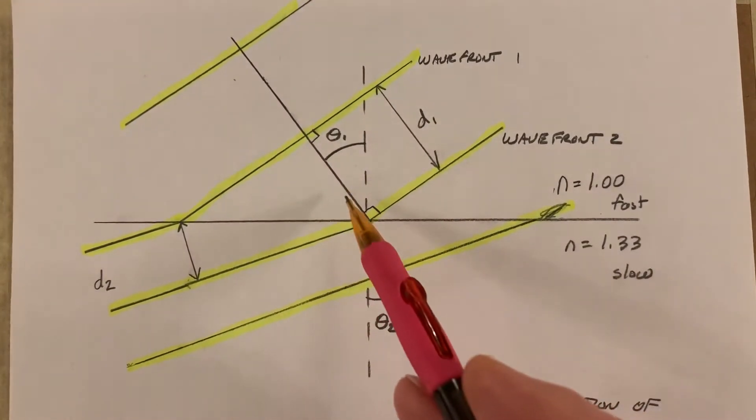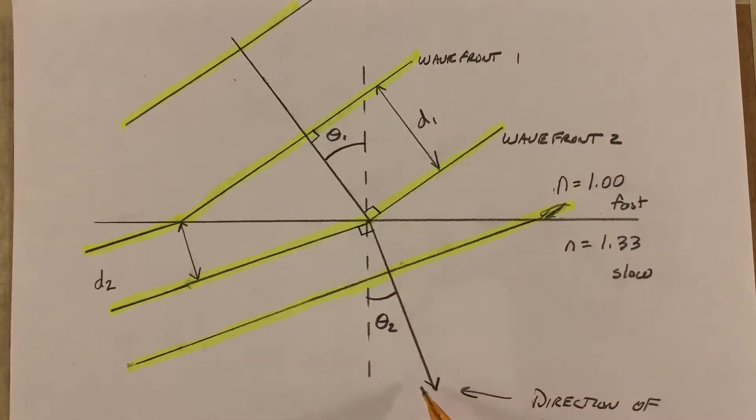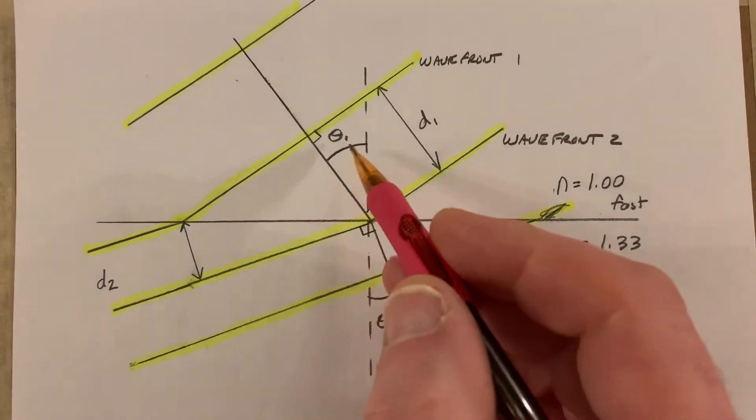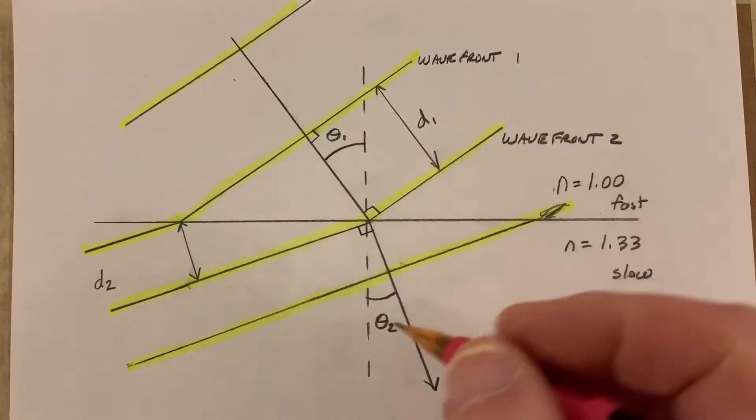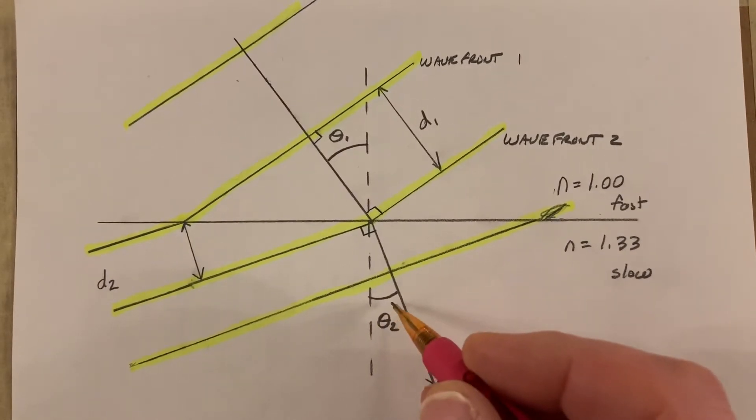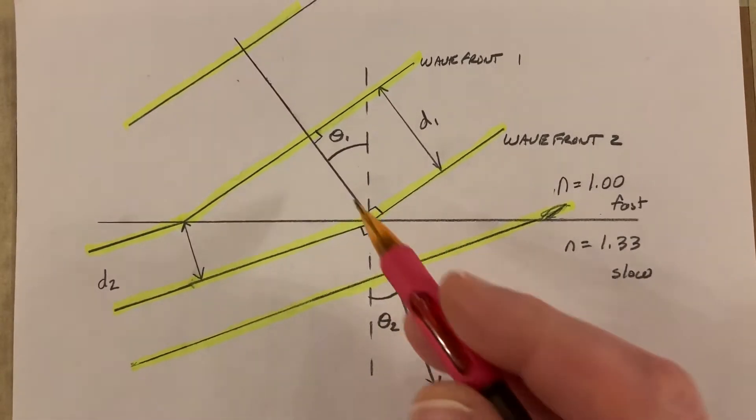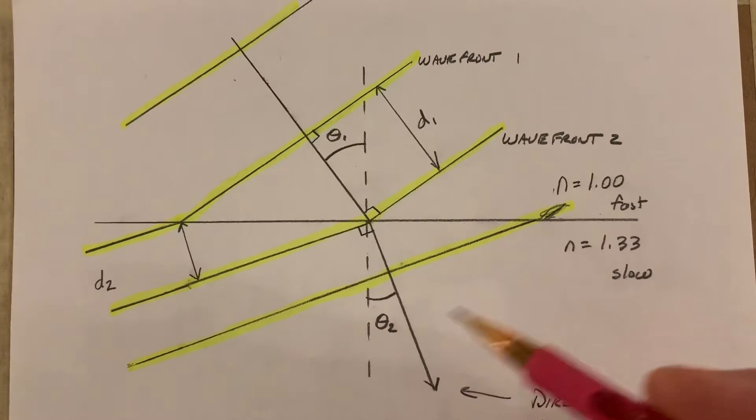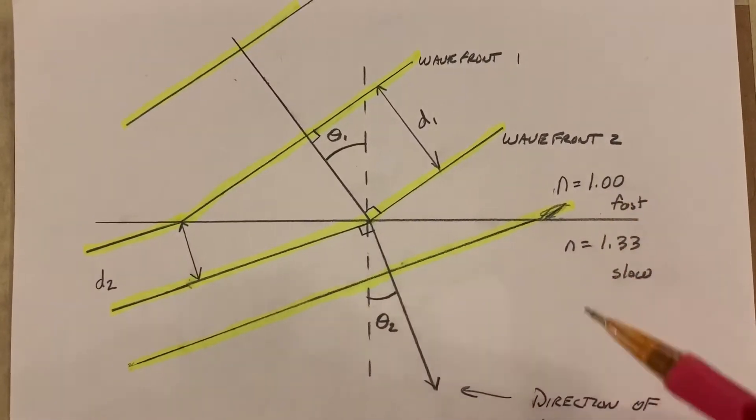And we've already come to the conclusion that light is going to bend towards the normal as it goes into that new medium, into the water. This theta 1 is our angle of incidence, and this theta 2 is our angle of refraction. And we want to be able to find out the relationship between those two based upon these two indices.